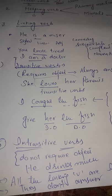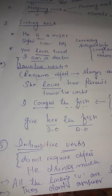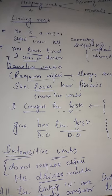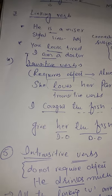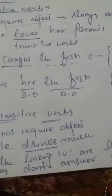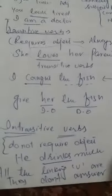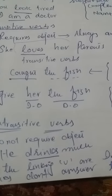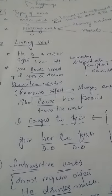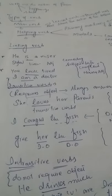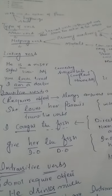An intransitive verb is one in which the action does not pass over to an object. For example: 'He drinks much' — here 'drinks' does not need an object. So this is called an intransitive verb. Briefly, we have discussed the topic of verbs. You can study this topic in more detail and write it down in your book.